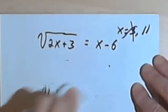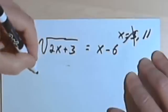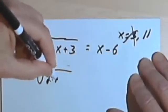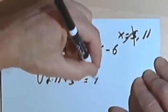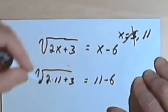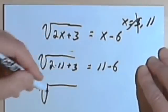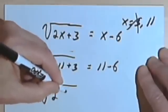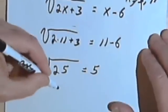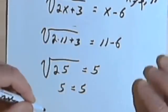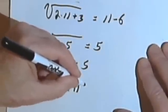Let's try it again and see if it works with 11. So I'm going to have the square root of 2 times 11 plus 3, and see if that equals 11 minus 6. So 2 times 11 is 22, plus 3 is 25. And 11 minus 6 is 5. And the square root of 25 is 5. So my answer, and my only answer, is x equals 11.